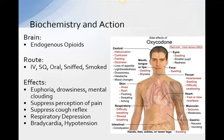Heroin intoxication can be classified into four phases: the first is the rush or euphoria; the second is the high or sense of well-being; the third is the nod — that escape from reality, lethargy, and virtual unconsciousness; and the fourth is the period of withdrawal, during which they typically seek more drugs to return to that euphoric feeling.